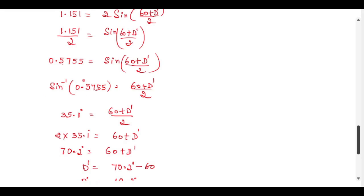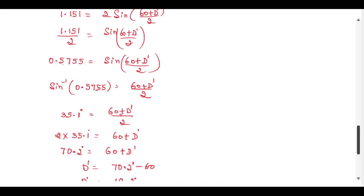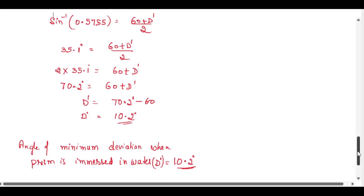We need to find this value using the logbook. To find sin⁻¹(0.5755), we go to the natural sines page and search for 0.5755. The nearest value is 0.5750, which corresponds to 35.1 degrees. So sin⁻¹(0.5755) ≈ 35.1 degrees. Therefore: 35.1 = (60 + D')/2, giving 2 × 35.1 = 60 + D', so 70.2 = 60 + D', and D' = 70.2 − 60 = 10.2 degrees. The new angle of minimum deviation when the prism is immersed in water is 10.2 degrees.